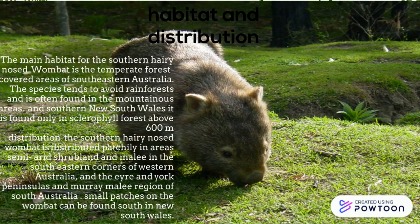Habitat and Distribution. The main habitat for the Southern Hairy Nose Wombat is around Western Australia, Southern South Australia and Southern New South Wales. They live in semi-arid grasslands and woodlands and can be found in high mountainous areas above 600 metres.